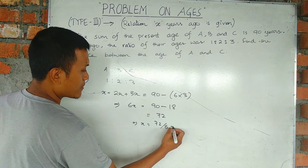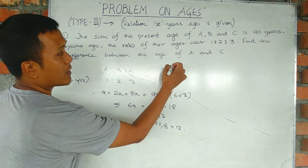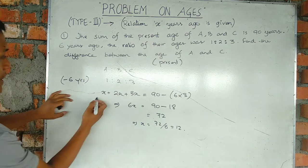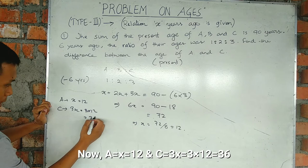90 minus 18 equals 72, so x equals 72 by 6. 6 times 12 equals 72, so x equals 12. Now we need to find the difference between the ages of A and C.